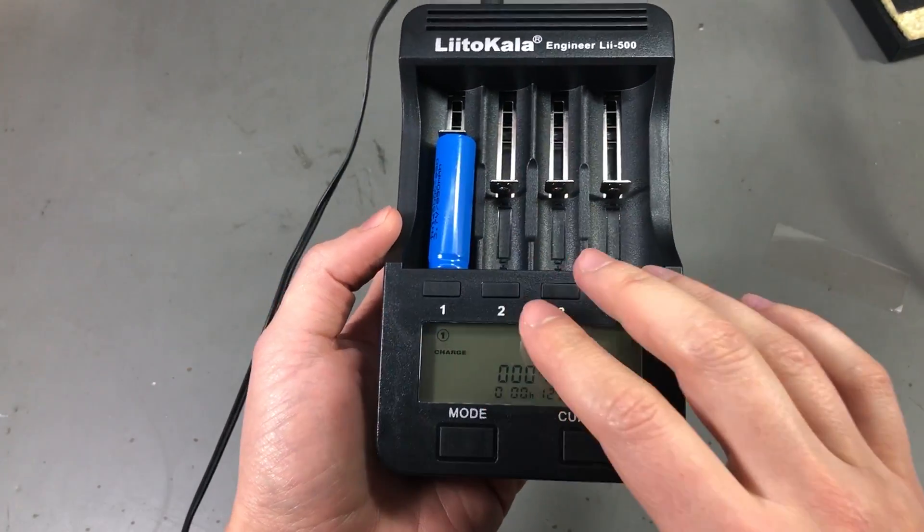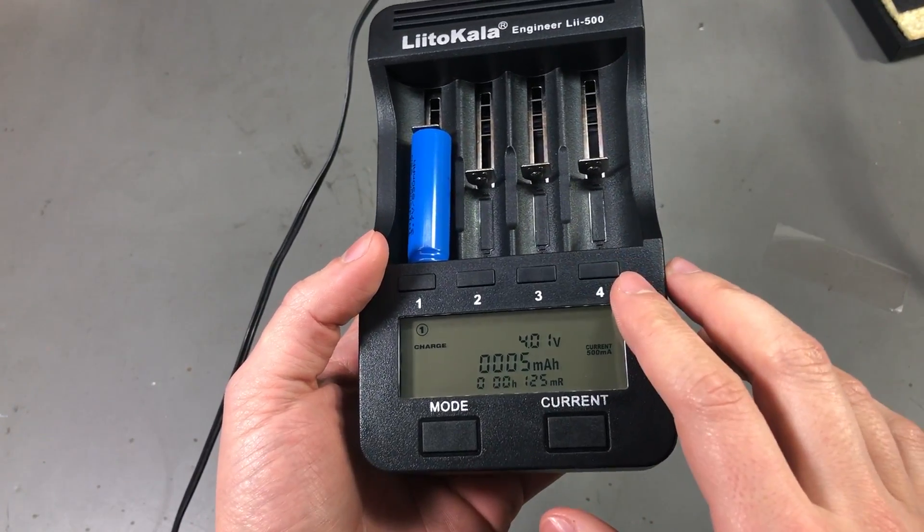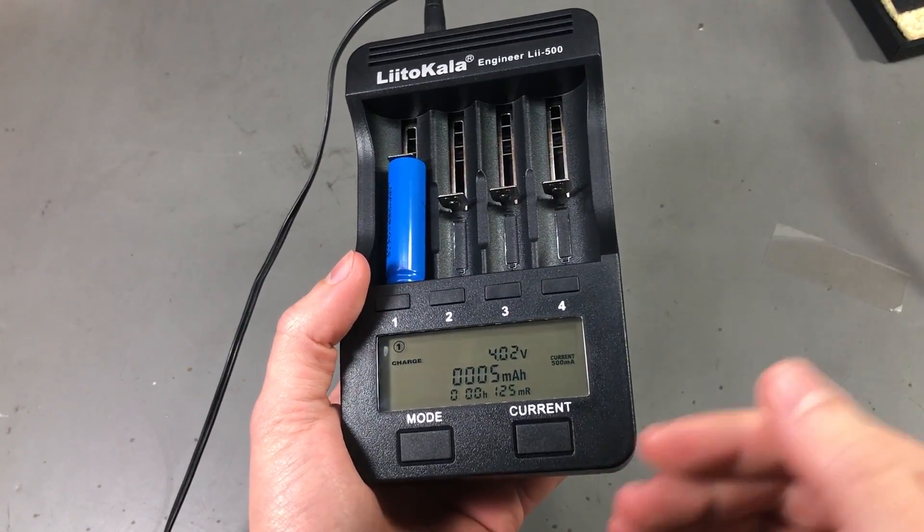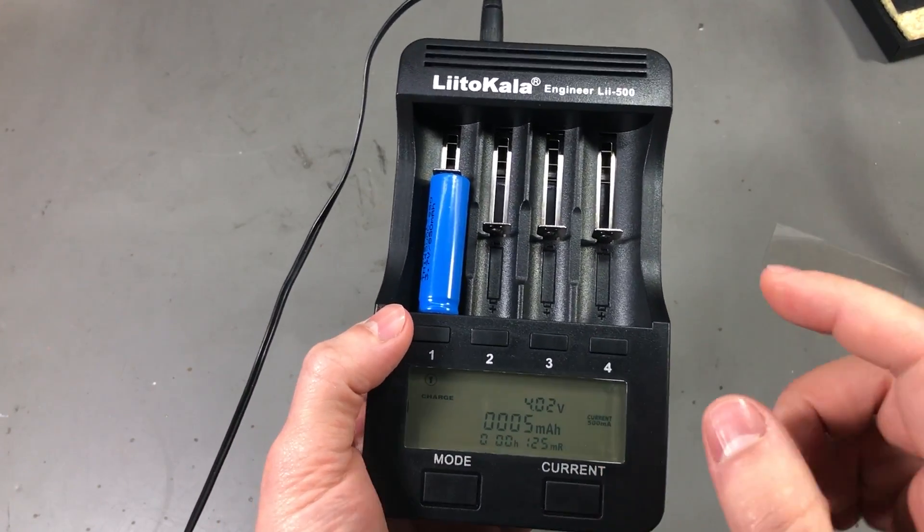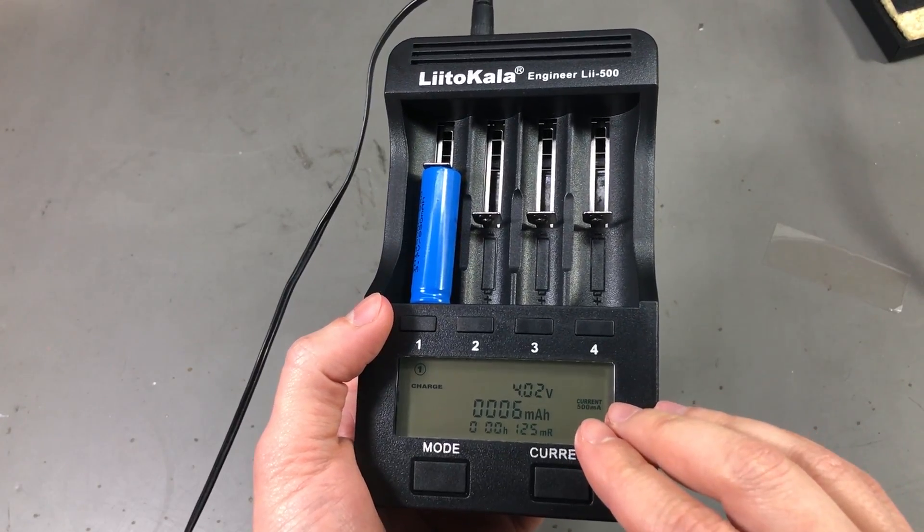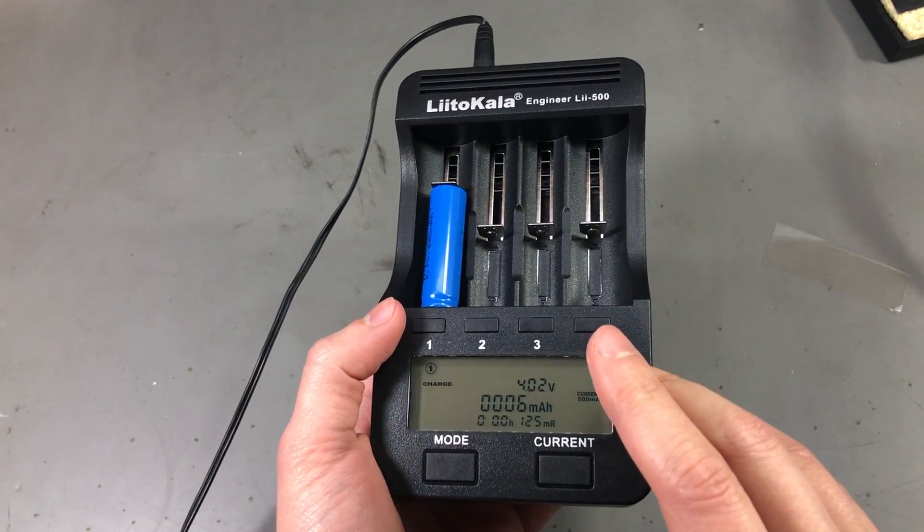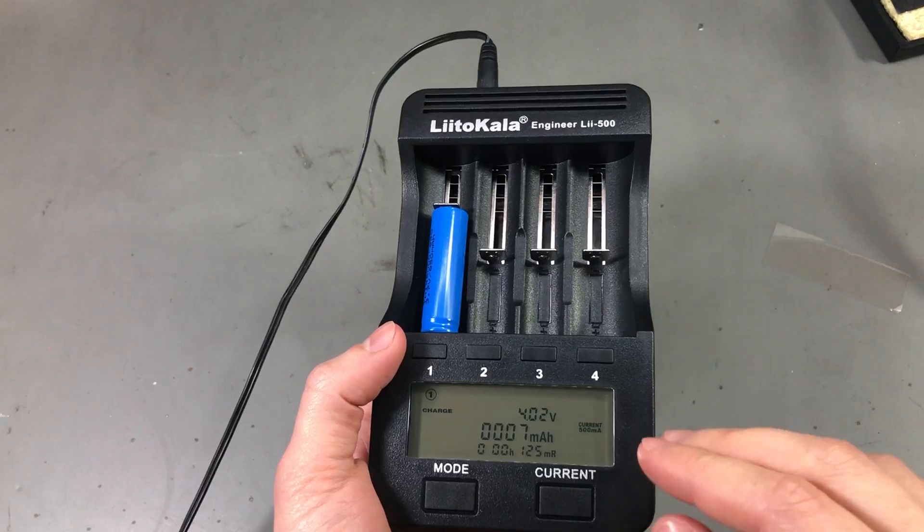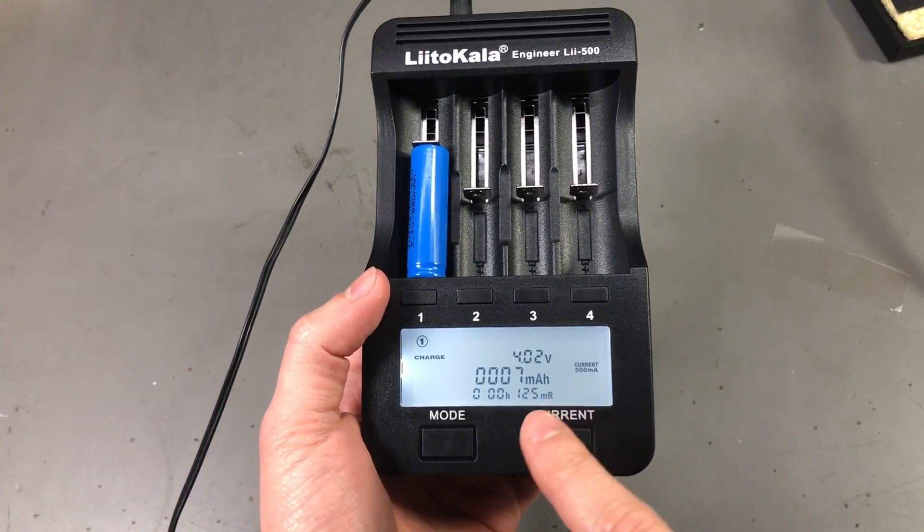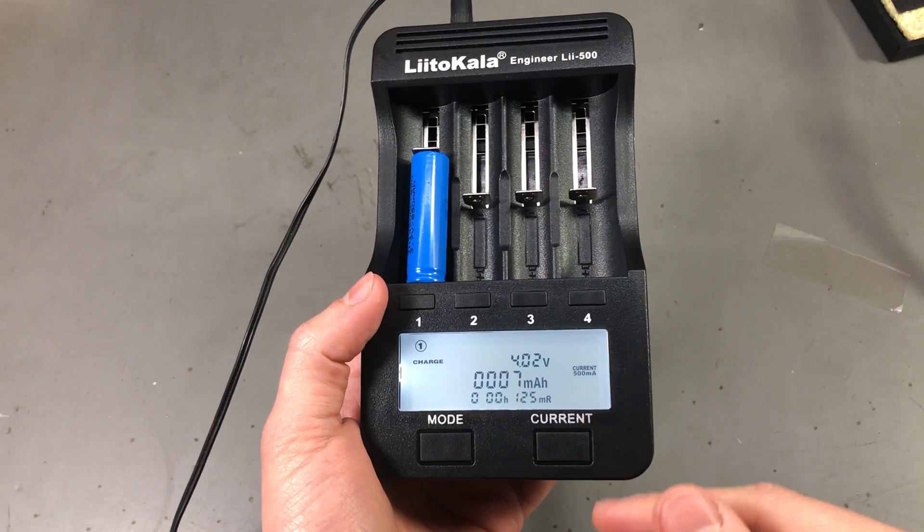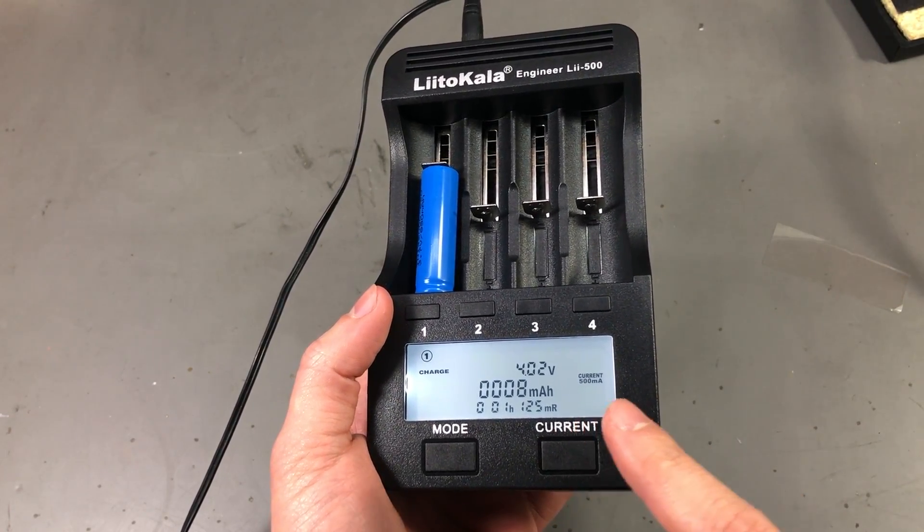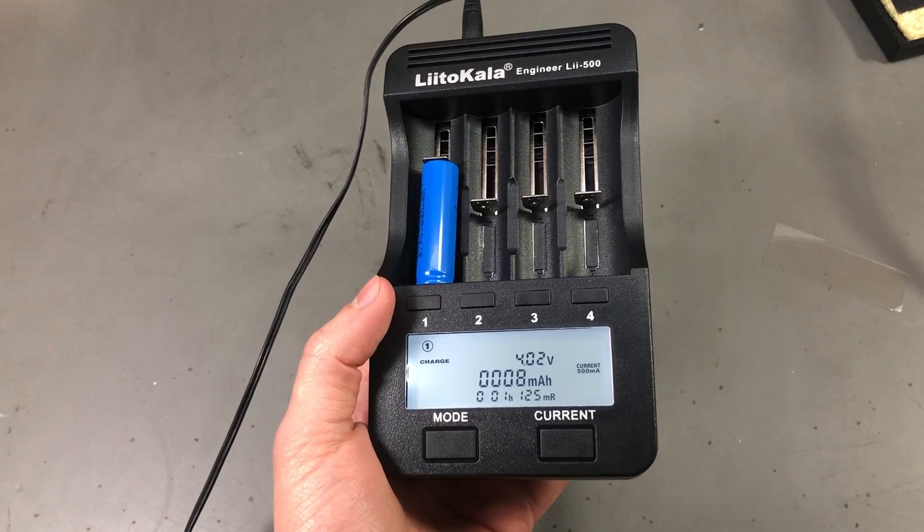And the charger itself has 3 operating modes. The first mode is charge and it should be obvious what this mode does. Then there is fast test, which discharges the battery then charges it to full to determine the capacity. And then there is the third mode which is normal test which first charges the battery then discharges the battery then charges it again, thus providing greater accuracy for determining the true battery capacity.